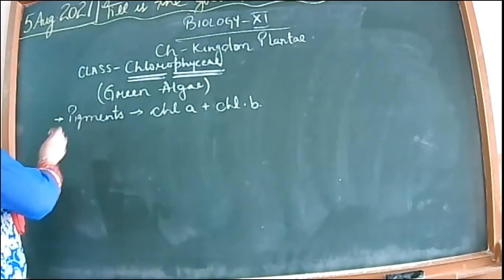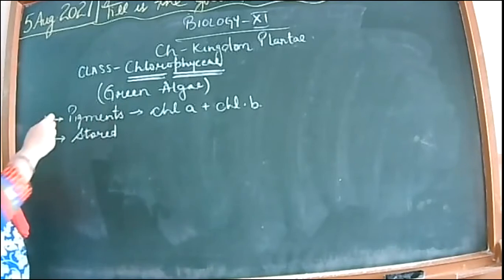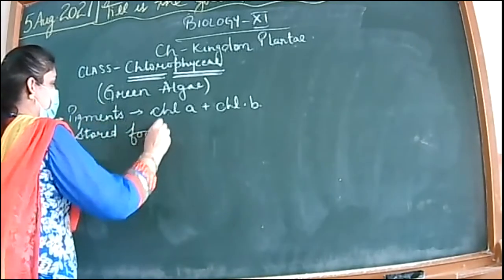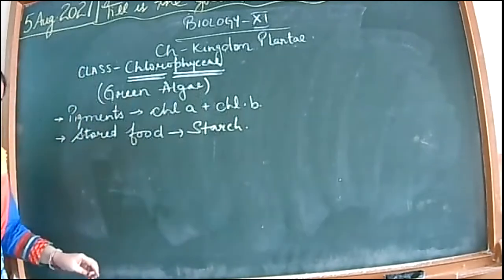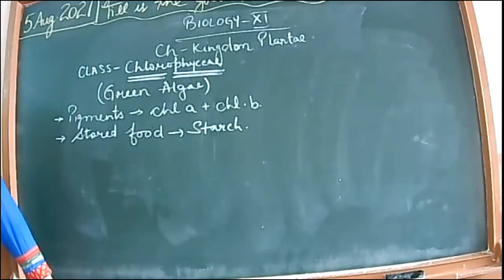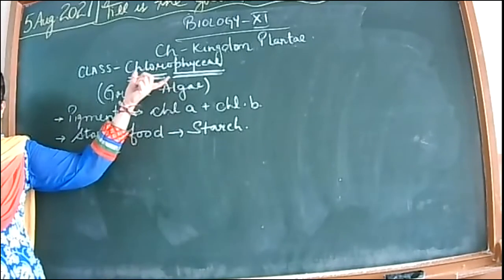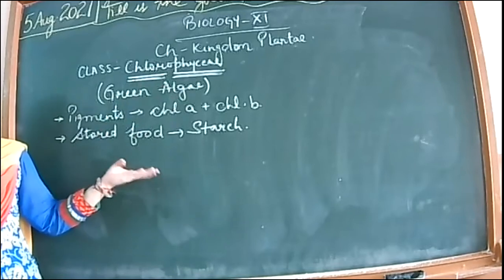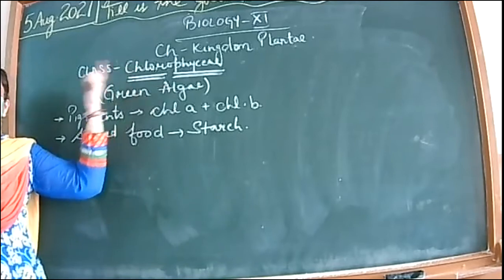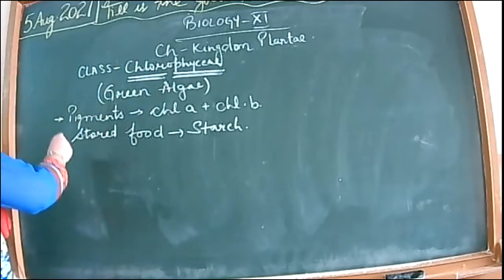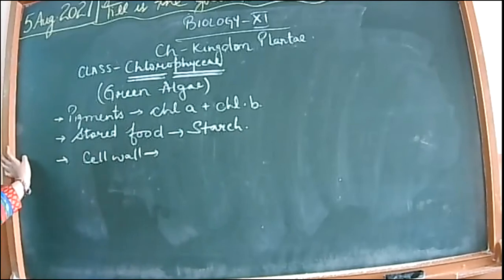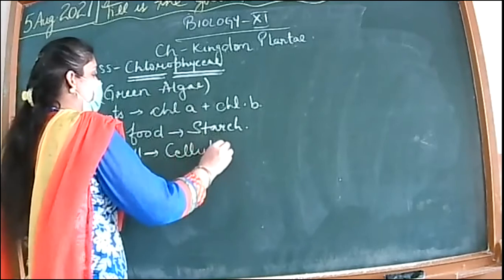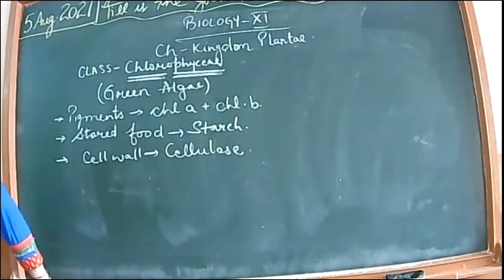Coming to the stored food, as these are the most general type of plant category, the stored food is also generalized - it is stored as starch. The food is stored in the form of starch in general. The cell wall components - what is the cell wall made up of? Cellulose. These are the most generalized ones, so the cell wall is made up of cellulose.